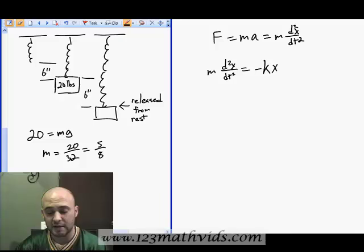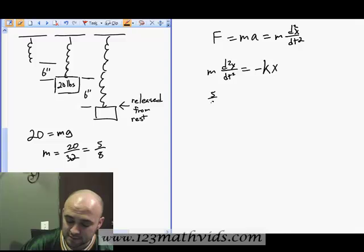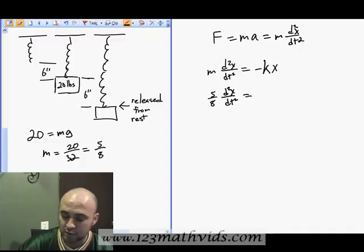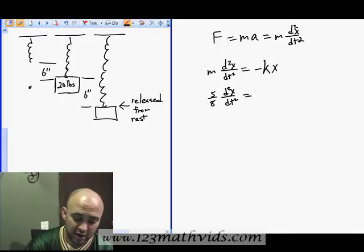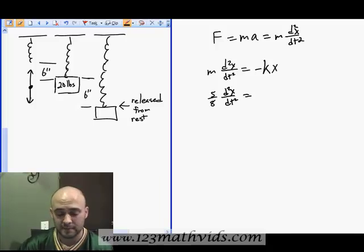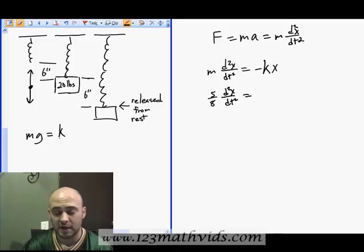Next we need to determine what that spring constant is. So first I want to write my mass up here. Now we have 5 eighths times acceleration, now we need to determine what that k value is. To find k, we're going to look at our equilibrium position. At equilibrium, the force up and force down are equal. Our downward force, mass times gravity, equals our spring force, which is the spring constant times the stretch, which was 6 inches.